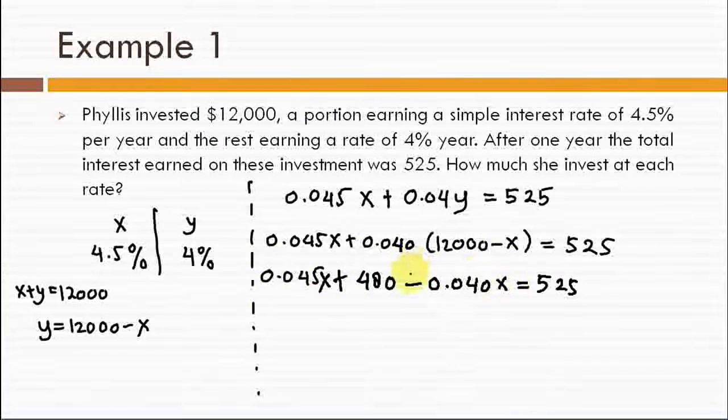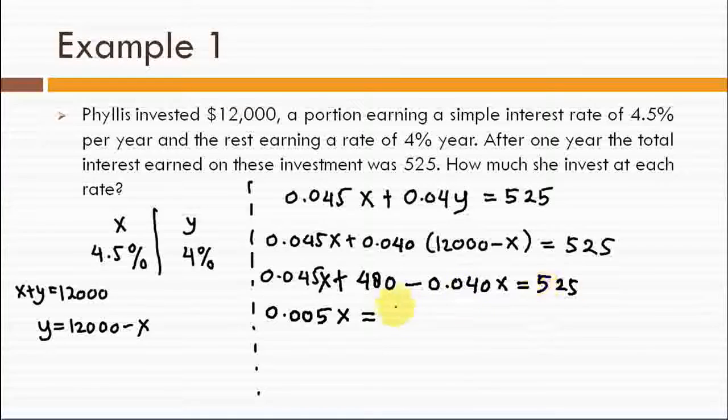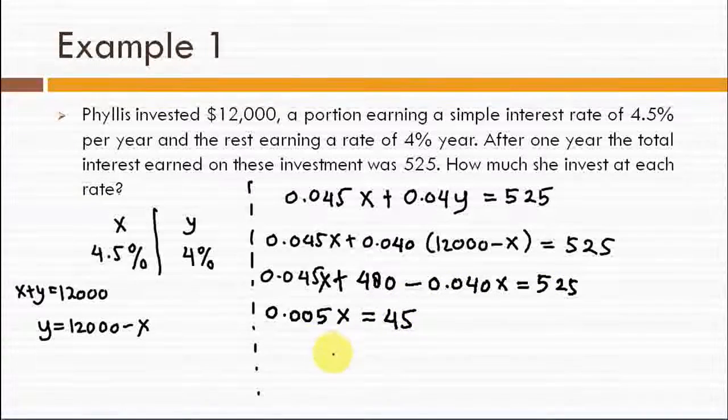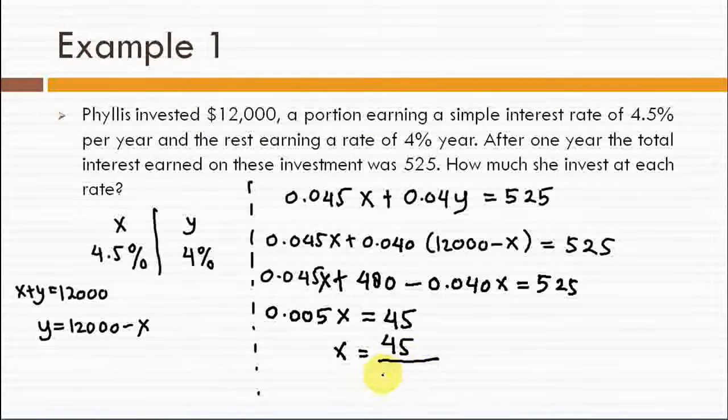This term minus that term is equal to 0.005x. And on the right hand side we have 525 minus 480 which is 45. Therefore, x is 45 divided by 0.005 which is equal to 9000.